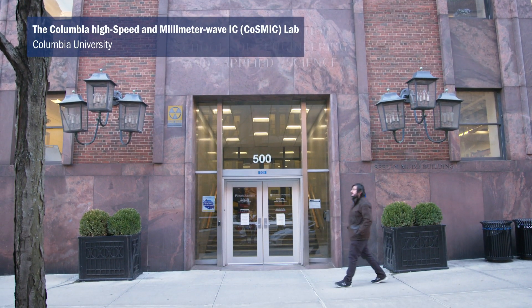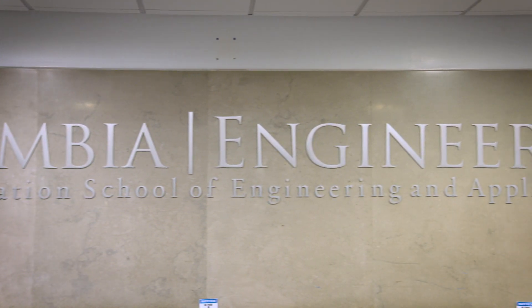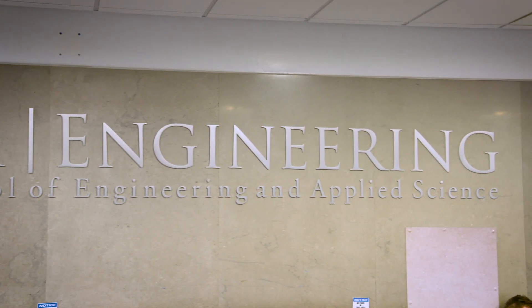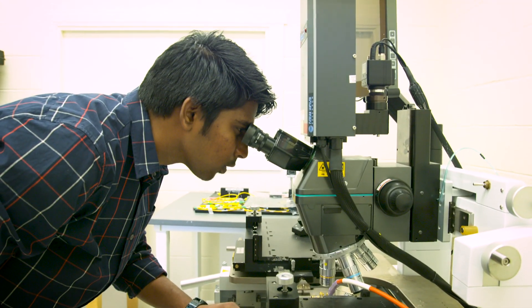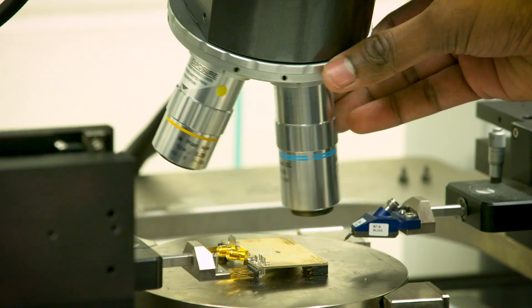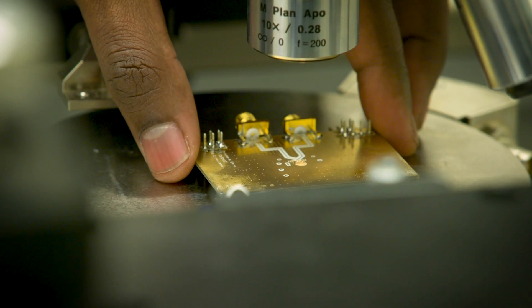The Columbia High Speed and Millimeter Wave IC Lab, also known as COSMIC Lab, works at the intersection between applied physics and engineering. We look to make advances in applied physics, specifically applied electromagnetics, but at the same time translate those advances to practical engineering applications.